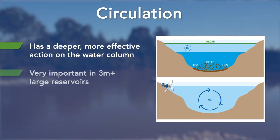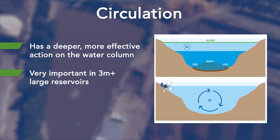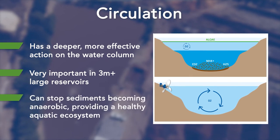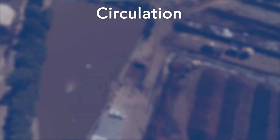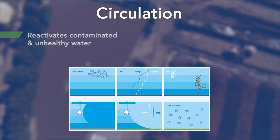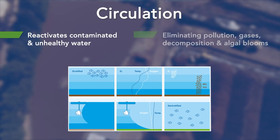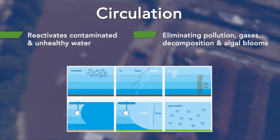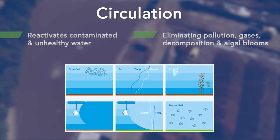This is particularly important in large reservoirs that are often deeper than three meters. Good circulation creates water currents that allow for better consistency across the water column and can help avoid sediments becoming anaerobic, providing a healthier aquatic ecosystem and resulting in a lot of money saved. Circulation also reactivates contaminated and unhealthy water, revitalizes the bottom soil, eliminates the risk of pollution, eliminates the formation of gases created by organic decomposition, and limits algal blooms without causing turbidity or erosion.